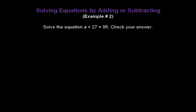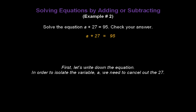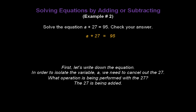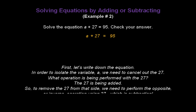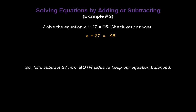Let's do another one. Solve the equation a plus 27 equals 95 and check your answer. First, write down the equation a plus 27 equals 95. In order to isolate the variable a, we need to cancel out the 27. The 27 is being added, so to remove it from that side, we perform the opposite or inverse operation using 27, which is subtraction. Let's subtract 27 from both sides to keep our equation balanced — minus 27 on the left and minus 27 on the right. The 27 is cancelled out on the left because 27 minus 27 is 0.